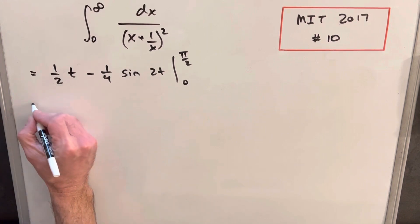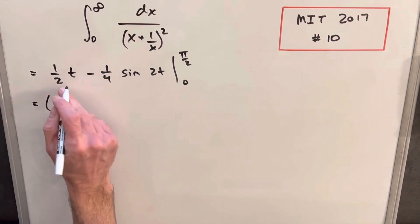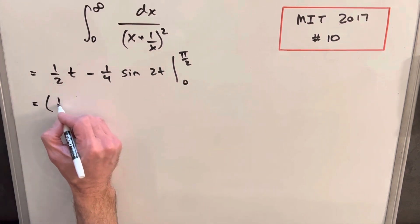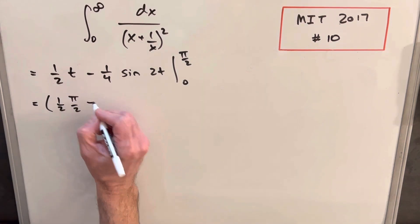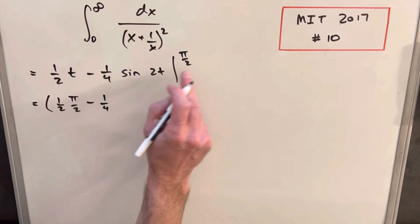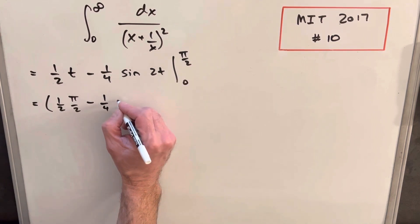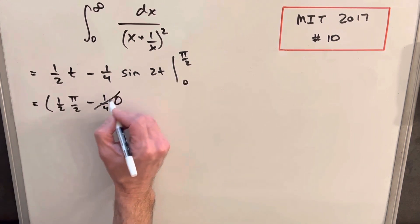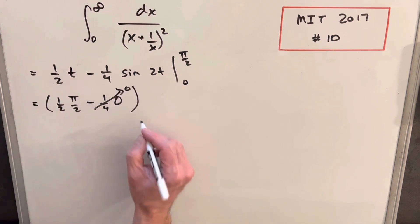Okay, now we just have to evaluate this thing. So for our first part, we're going to have half t. We'll plug in a pi over 2 here. Then we're going to have minus 1 over 4, sine of 2t. So 2 times pi over 2 is pi. So sine of pi is 0. So this piece is just going to go to 0.